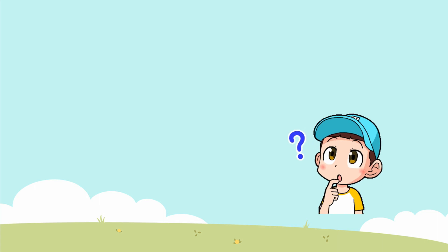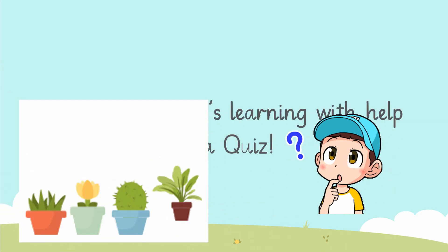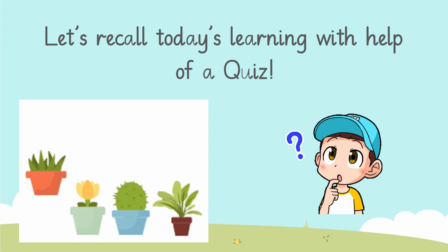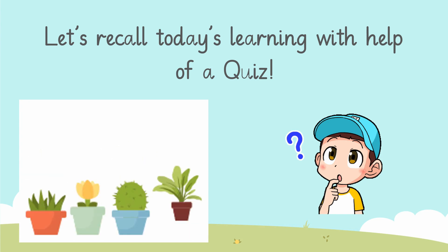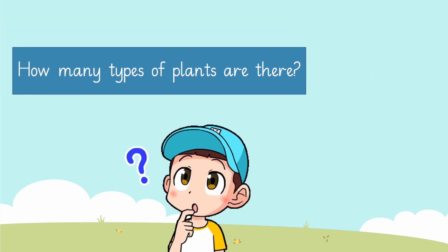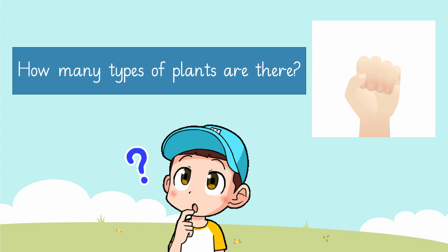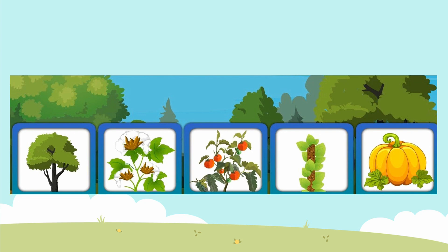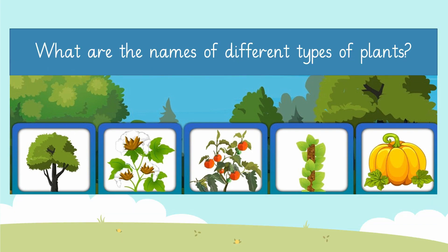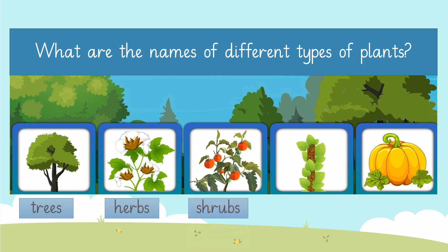I hope you have learned a lot about plants. Now it's time for the quiz! My first question is: how many types of plants are there? Come on, you can guess it! Well done — there are five types of plants. Now who is going to tell me the names of the different types of plants? They are trees, herbs, shrubs, climbers, and creepers.